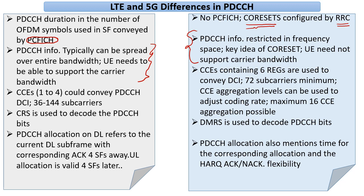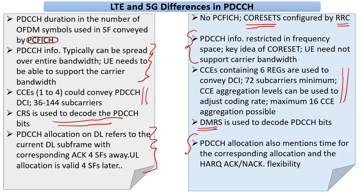There is a similar idea of control channel elements with slight differences in sizes and aggregation possibilities. CRS was very important for PDCCH decoding in LTE, but there is no CRS in 5G NR — DMRS is used for decoding instead. PDCCH in LTE also had certain restrictions for downlink and uplink allocation, whereas there is a lot more flexibility in 5G NR.